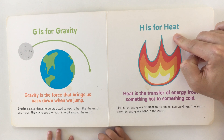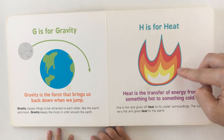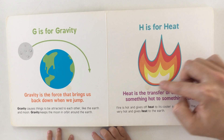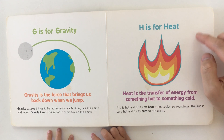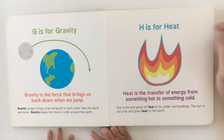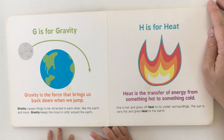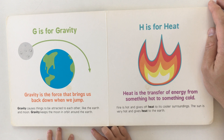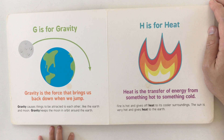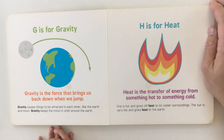H is for heat. What's the picture? Fire — very good! Heat is the transfer of energy from something hot to something cold. Fire is hot and gives off heat to its cooler surroundings. The Sun is very hot and gives heat to the Earth.